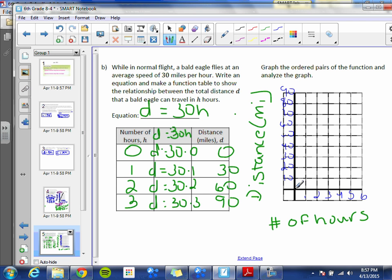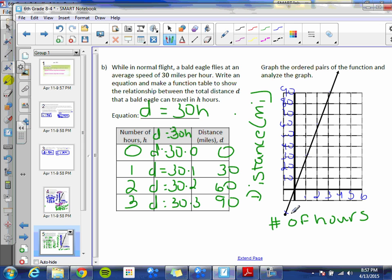And we plot our points: 0, 0; 1, 30; 2, 60; and 3, 90. Okay, we are going to graph our line. Again, please use a straight edge or a ruler if you have it. Again, for some reason my arrow didn't show up, so we'll just draw one in.